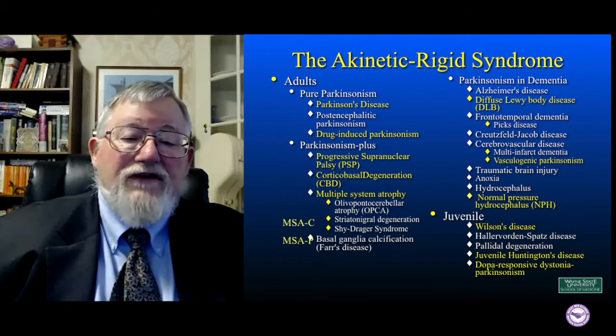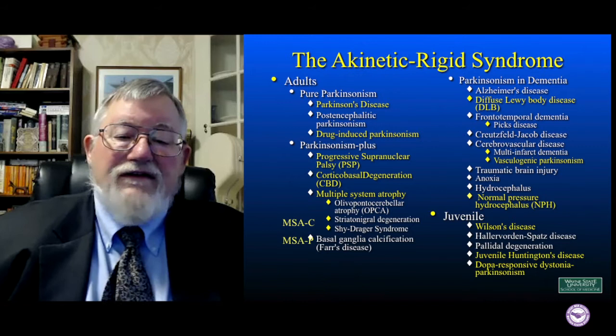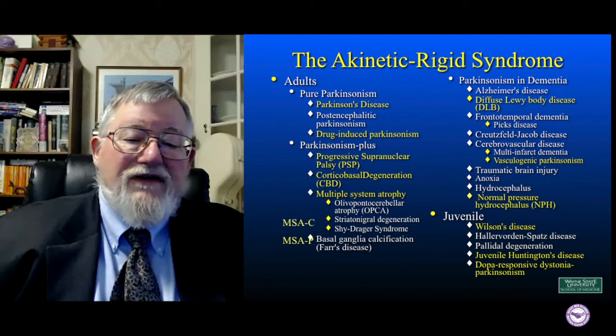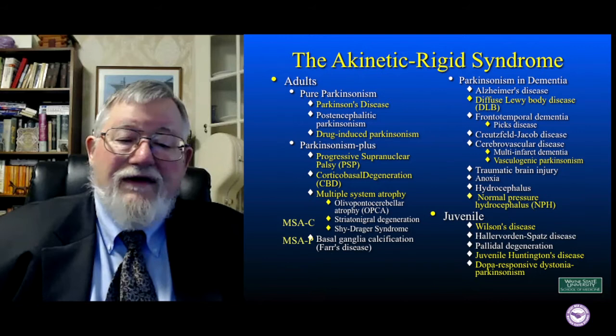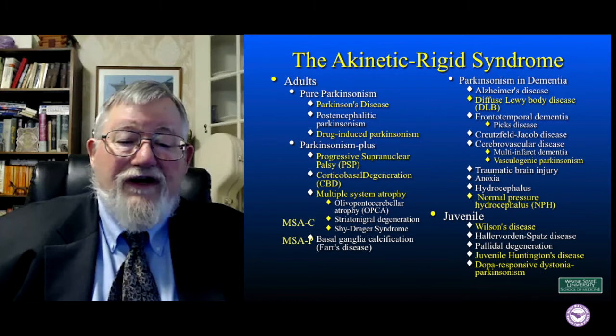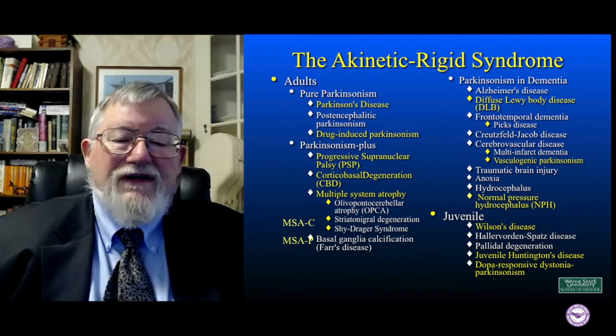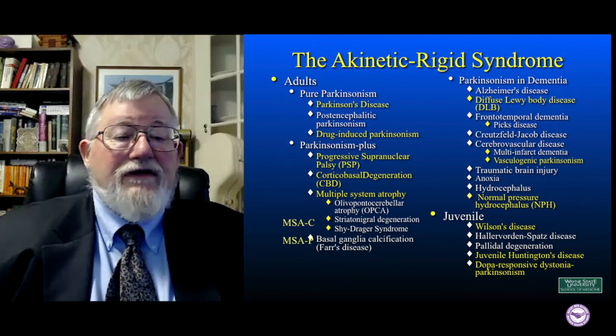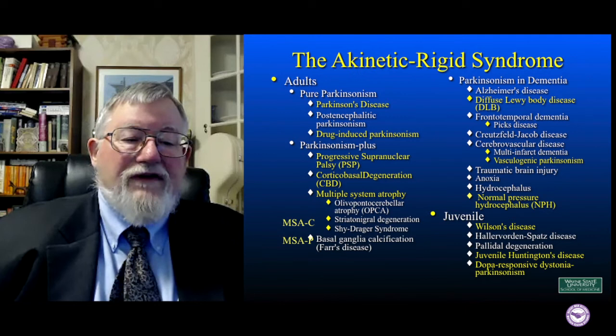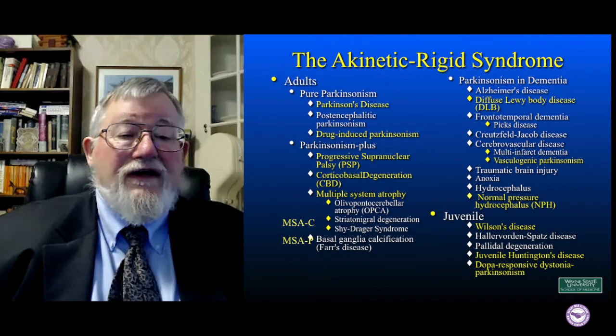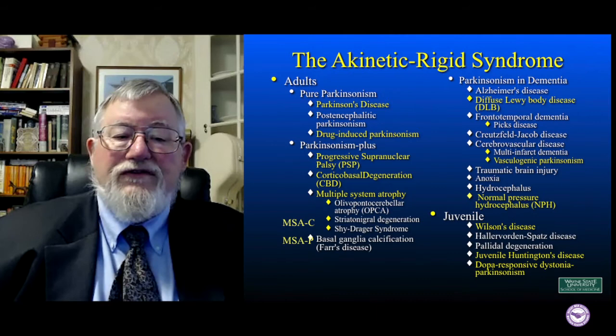Many other dementias like Alzheimer's and frontotemporal dementias can cause some Parkinsonism, more often late in the disease. Cerebrovascular disease can cause both dementia and vasculogenic Parkinsonism. You can get Parkinsonism after traumatic brain injury, anoxia, or with hydrocephalus — including normal pressure hydrocephalus. So you have this large list of things when somebody presents with initial akinetic rigid Parkinsonian symptoms. And as mentioned, Parkinson's disease is by far the most common of these, which brings us to another diagnostic principle known as Sutton's law.